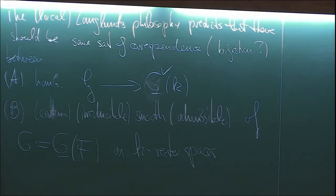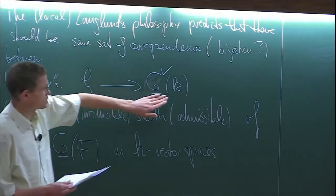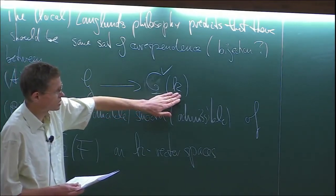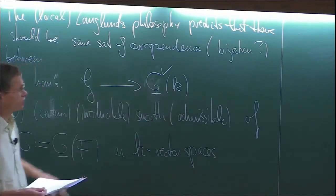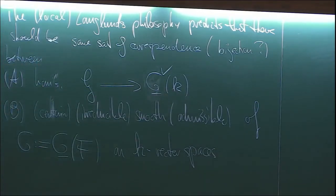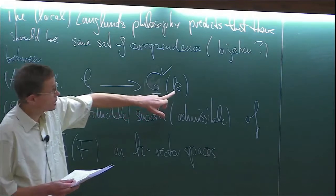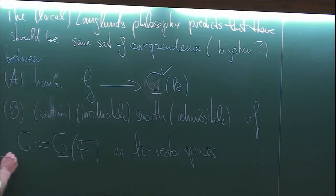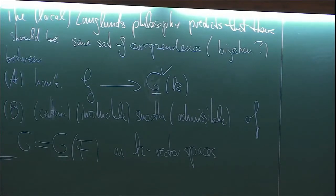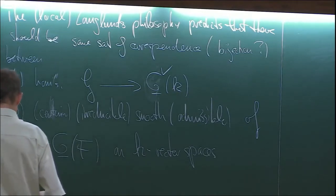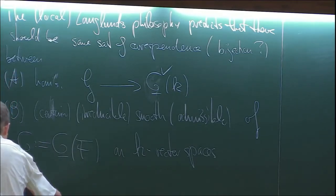Nice answers to this objective have been given in the case where little k is the field of complex numbers, or more generally a field of characteristic zero algebraically closed. And there are also good answers given in the case where the characteristic of little k is prime to p. But in today's talk I want to focus on the case where little k has actually characteristic p — and in that case we are really almost completely in the dark still. So that is, in a sense, the most interesting one for us.